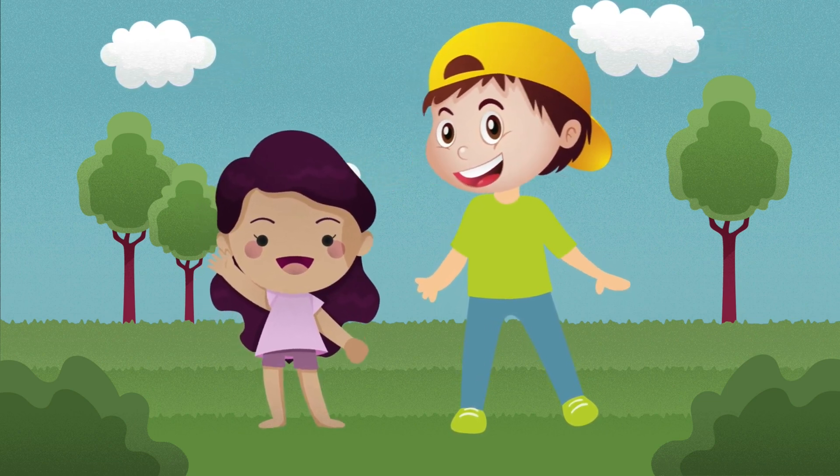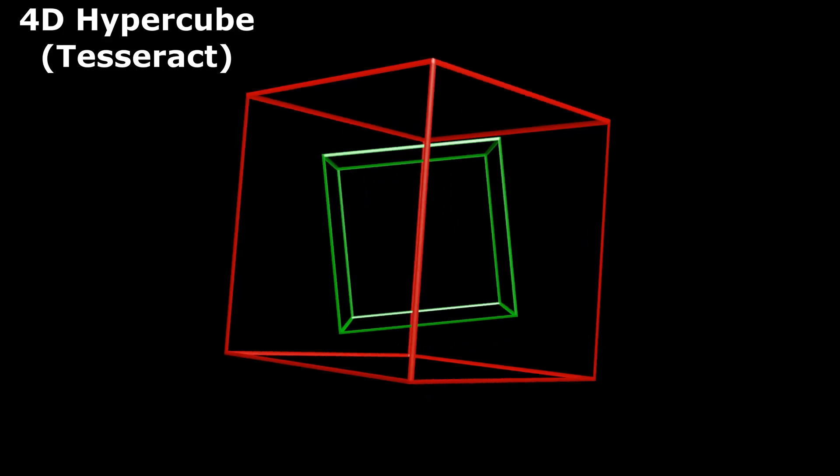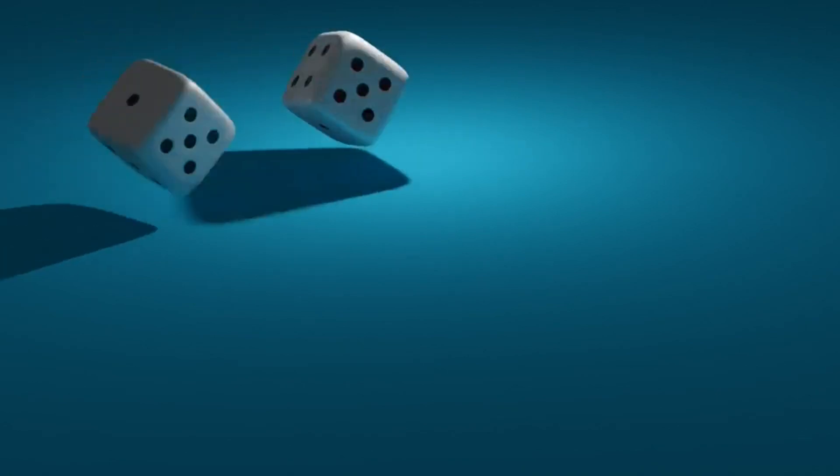Now, here is where it gets weird. A shadow is a lower dimensional projection. A 4D hypercube casts a 3D shadow, just like a cube casts a 2D shadow.